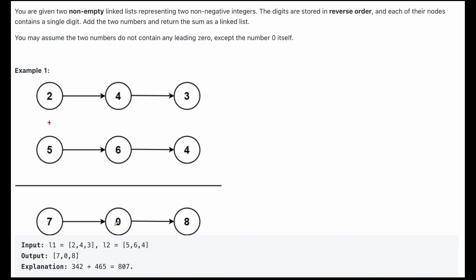4 plus 6 is going to be 10, but then since we have to carry the 1, this becomes a 0 and then we carry a 1 here. And then 4 plus 3 is 7 plus the 1 that we carried is 8.